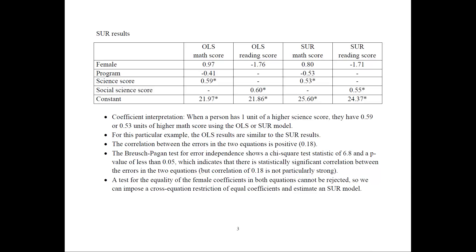And the next thing that we can do is use the Bruch-Pagan test for error independence, which shows a chi-squared test statistic of 6.8 with a p-value of less than 0.05, which means that there's statistically significant correlation in the errors, and therefore we're justified in using the SUR models.